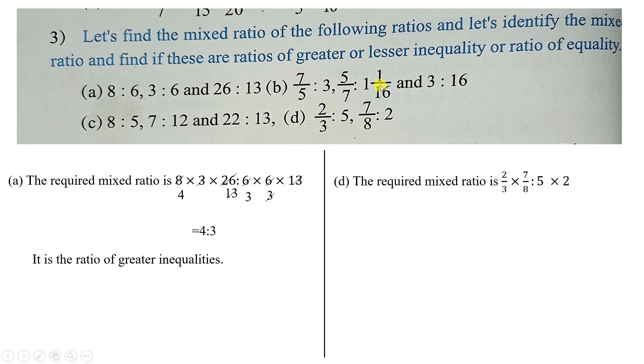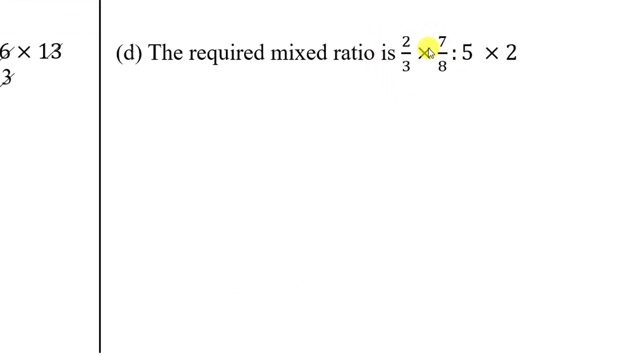Let us check another question, D. Now we need to find mixed ratio. Antecedent, antecedent multiply, that is 2/3 into 7/8 is to, consequent, consequent, 5 into 2. Now here, antecedent and consequent, how much to cancel.